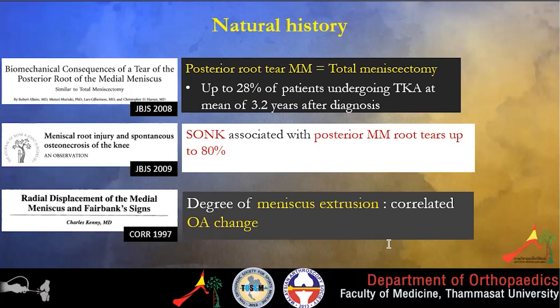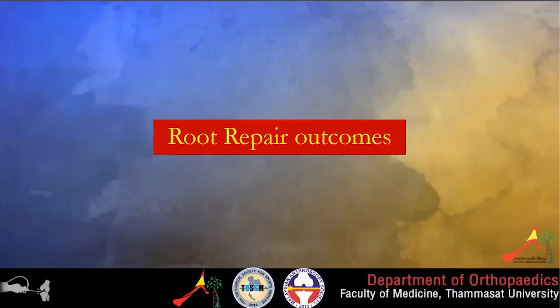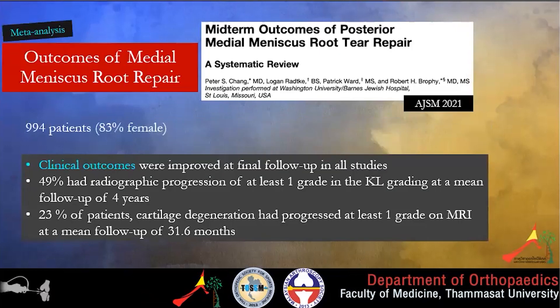The degree of meniscus extrusion is also correlated with arthritic changes by Fairbank sign. This is one of my cases — she had a root tear and was treated conservatively. She ultimately developed subchondral insufficiency fracture and required total knee joint replacement after that.